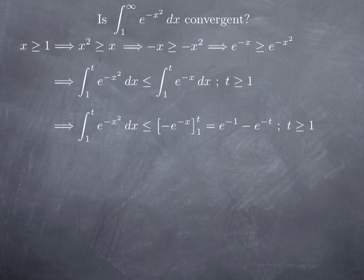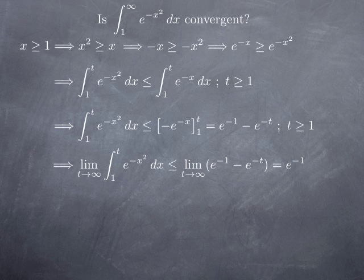This inequality — that the integral from 1 to t of e to the negative x squared is less than or equal to e to the negative 1 minus e to the negative t — is preserved when we take limits as t goes to infinity. On the left-hand side, the limit as t goes to infinity of the integral from 1 to t of e to the negative x squared is the improper integral we are trying to analyze. On the right-hand side, as t goes to positive infinity, negative t goes to negative infinity, and the limit of the exponential at negative infinity is zero, so the right-hand side limit is just e to the negative 1.